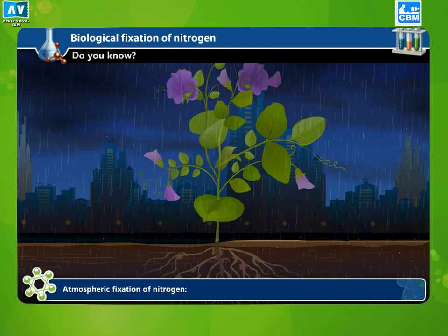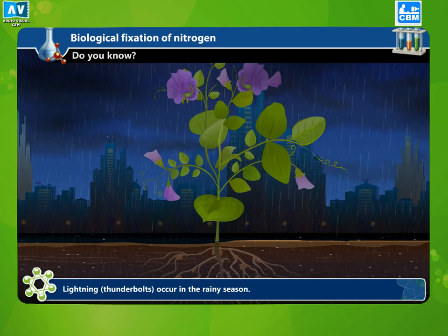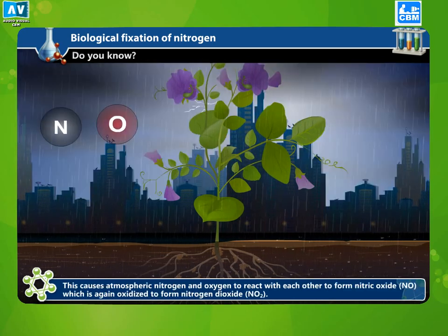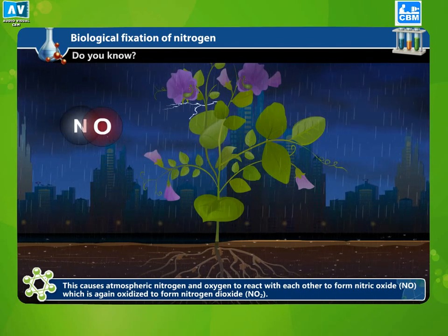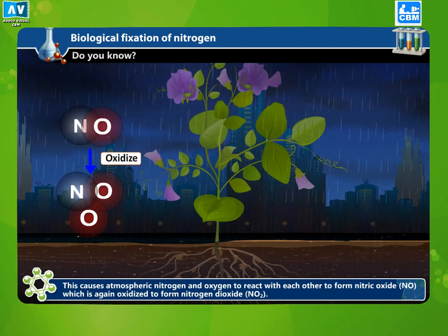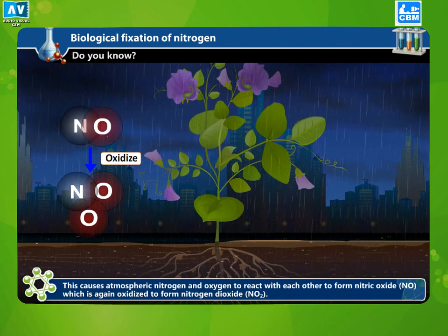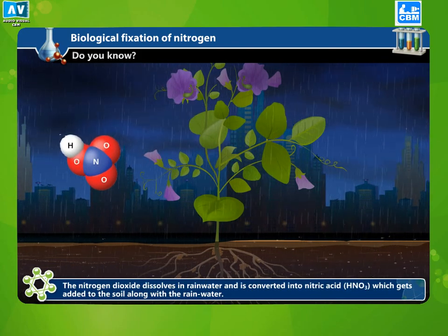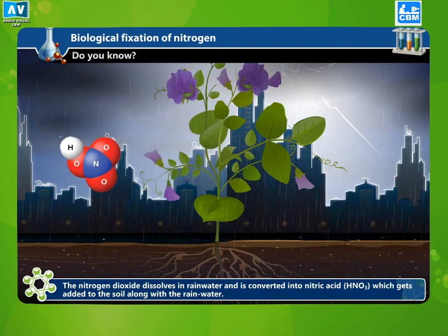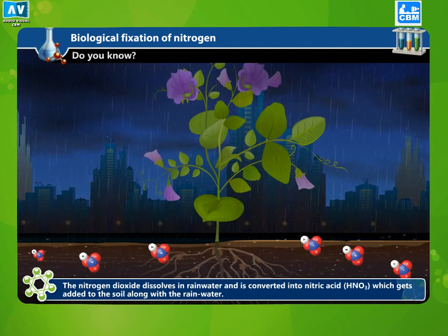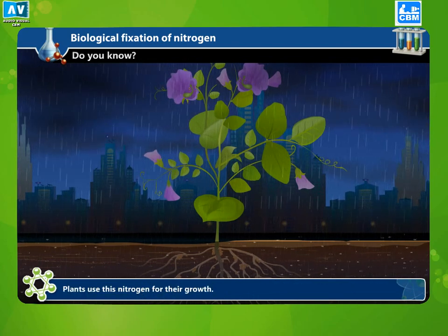Atmospheric fixation of nitrogen. Lightning and thunder occur in the rainy season. This causes atmospheric nitrogen and oxygen to react with each other, forming nitrogen dioxide. The nitrogen dioxide dissolves in rainwater and is converted into nitric acid, HNO3, which gets added to the soil along with the rainwater. Plants use this nitrogen for their growth.